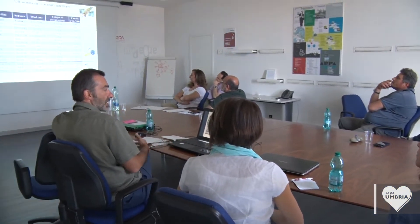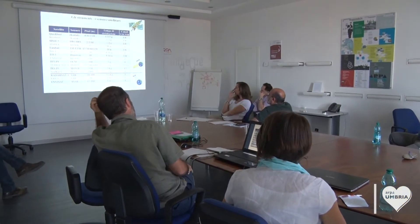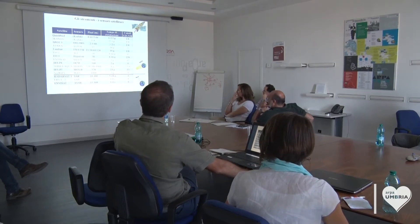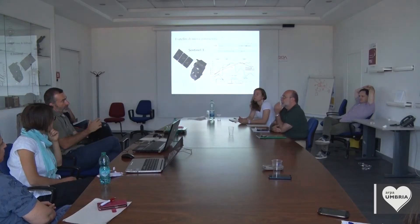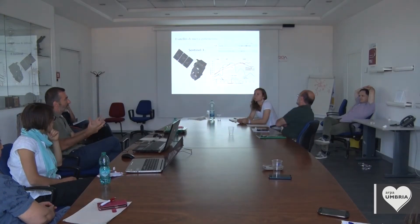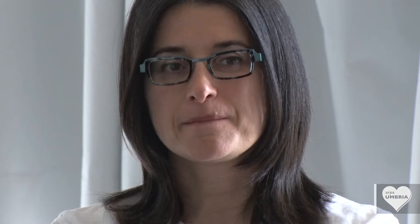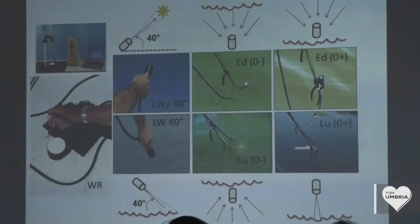Nell'ambito del progetto, Arpa Umbria per due giorni ha ospitato a Perugia e al Lago Trasimeno i ricercatori del CNR IREA, con i quali sono state condivise sia attività di formazione e informazione che attività sul campo. Oggetto dell'incontro della prima giornata, tenutosi nella sede di Perugia di Arpa Umbria, è stato l'utilizzo del Remote Sensing, il telerilevamento da satellite, e i nuovi prodotti del progetto EOMORES applicati al Lago Trasimeno.